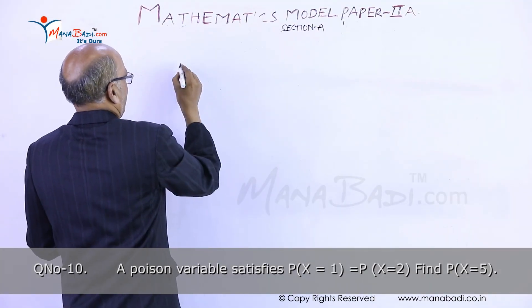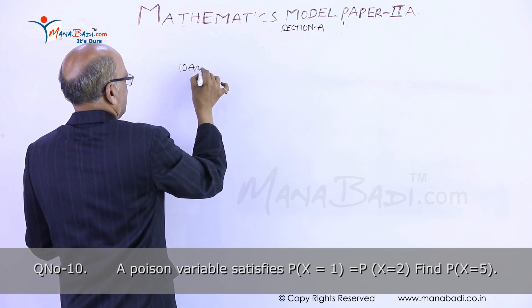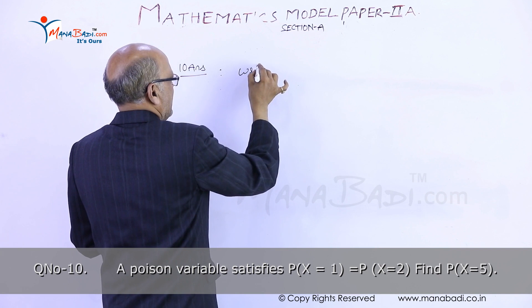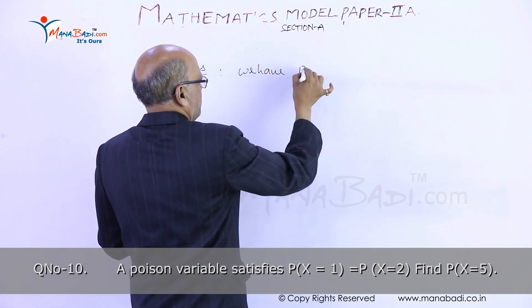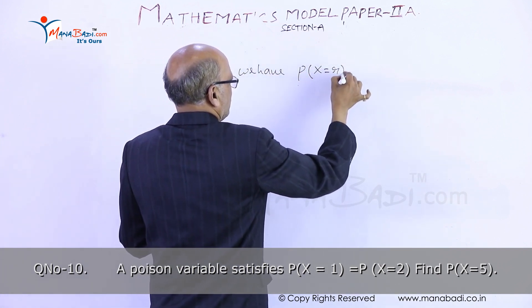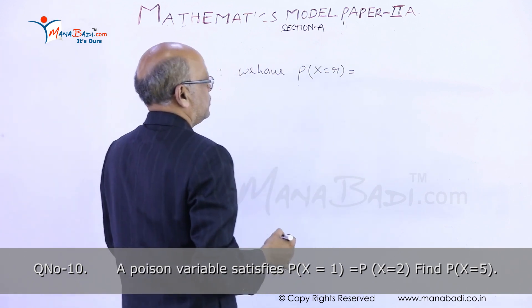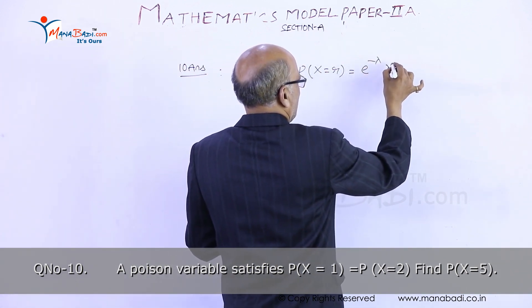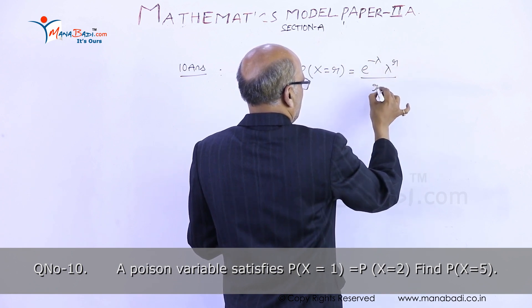Question number 10. We know that for Poisson distribution, we have P(x=r) equals e to the power of minus lambda, times lambda to the power of r, divided by r factorial, provided lambda is greater than 0.